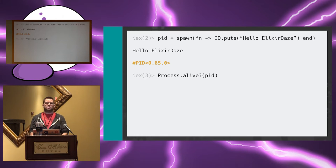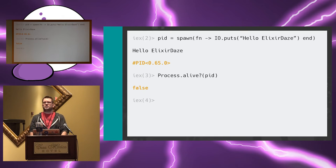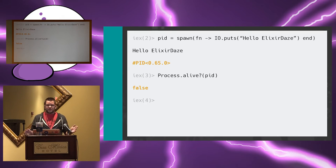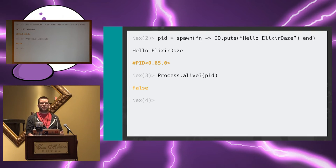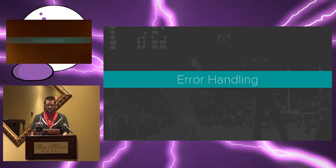Now we check on the process — we say process alive, what's going on with the PID? And false — it is no longer live. That's because processes run the function you give them and then they gracefully die. They're real simple: just give me the work, I do the work, and then I'm done. So now we can take this newfound knowledge of processes and start using them in our apps. But eventually you're going to give it a big task, and it's going to fail halfway through, not die gracefully, and not give you the answer you need. So now it's time to figure out some error handling for these processes.